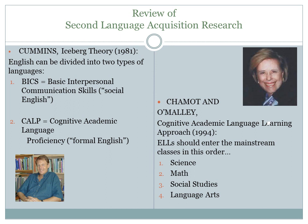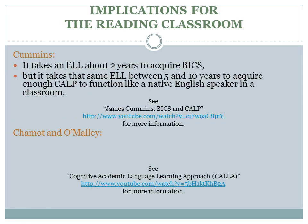This is because of the various types and functions of language needed to read and write. You already know that, as a teacher, no matter what your content area, you need to be focused on teaching Academic English, or CALP. Probably the most important difference between BICS and CALP for a classroom teacher to realize is that it takes an ELL about 2 years to acquire BICS, but between 5 and 10 years to acquire enough CALP to function like a native English speaker in a classroom.